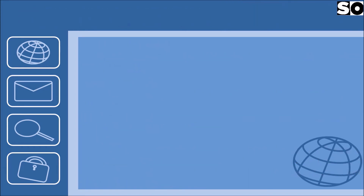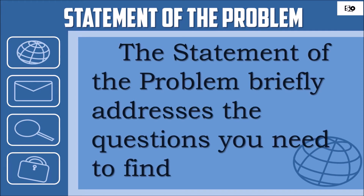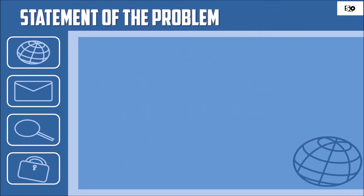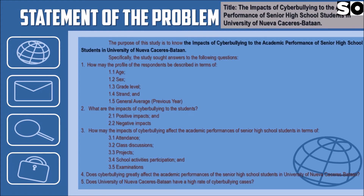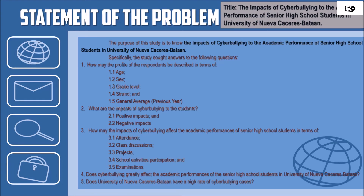Statement of the Problem. The statement of the problem directly addresses the questions you need to find. Here is an example — the title is The Impact of Cyberbullying to the Academic Performance of Senior High School Students in the University of Nueva Caseras, Bataan. In the example, it shows: Number 1, the profile of the respondents; Number 2, the impacts of cyberbullying either positive or negative; Number 3, how cyberbullying affects academic performance in terms of attendance, class discussion, project, school activities, participation, and examination — plus two additional questions.